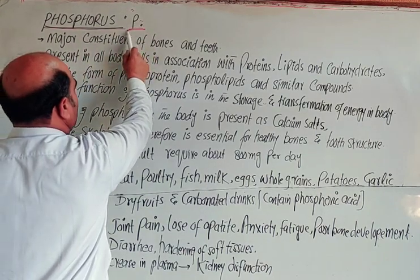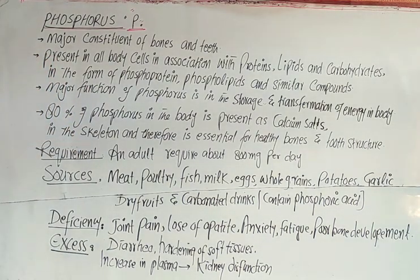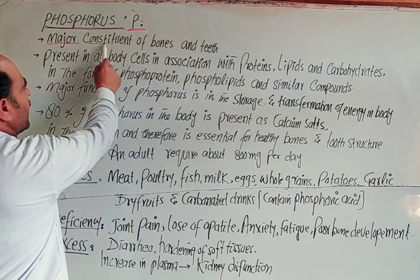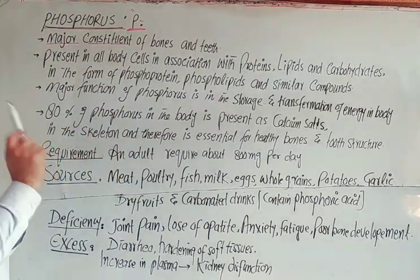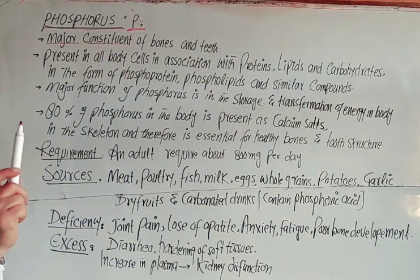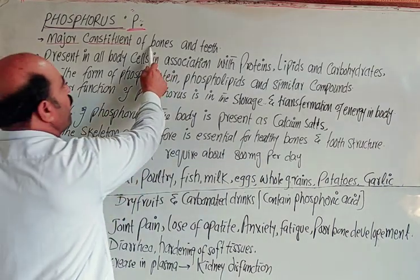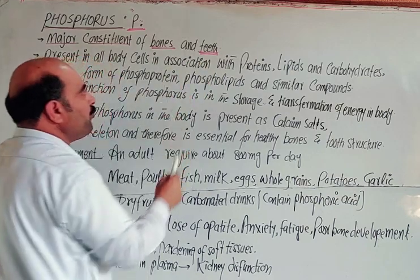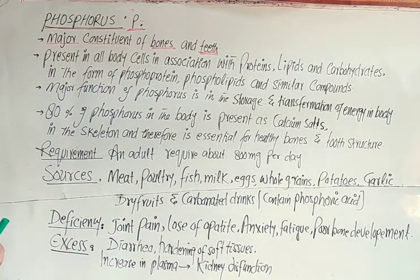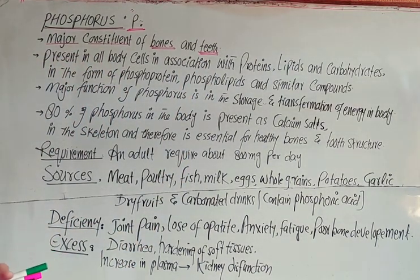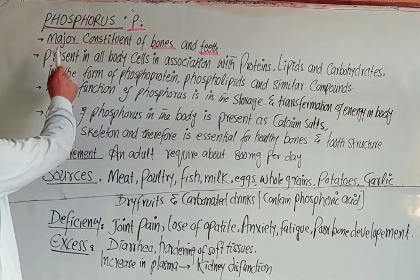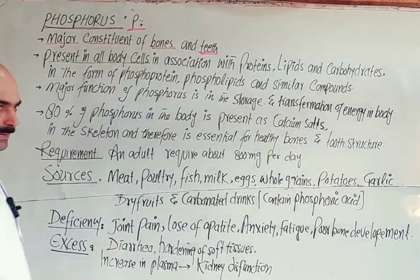What is the main role of phosphorus in the human body? First, phosphorus is a major constituent of bones and teeth. It plays a key role in the formation of bones and teeth along with calcium.